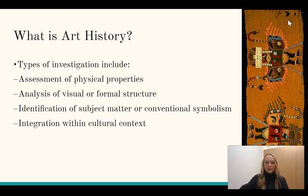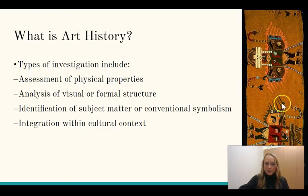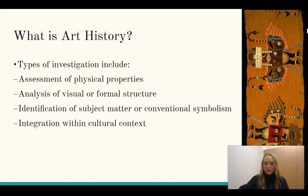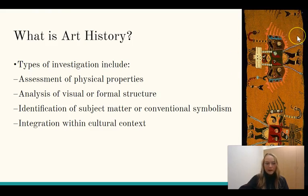Art historians employ several types of investigation. The first is assessment of physical properties — establishing what a work of art is made out of. For example, this Paracas textile is made from camelid fiber, from animals related to llamas used for their wool. It is a plain weave with stem stitch embroidery — both woven and embroidered — which is one way we assess the physical properties of a work of art.